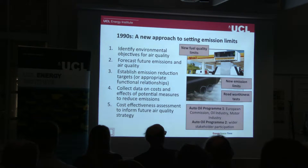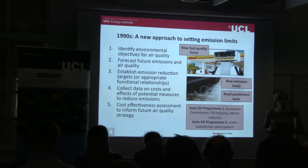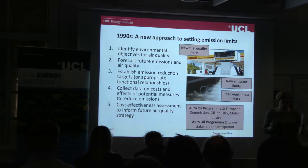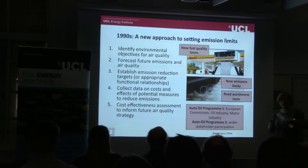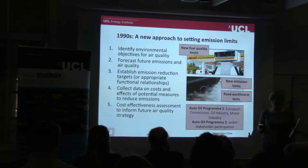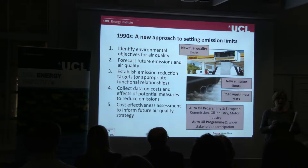Around about the same time, a new approach emerged. UN ECE was very much driven by best available technology as defined by the motor industry. The European Commission thought we need a new way — looking at what we would call environmental capacity. How much emissions can the environment cope with? You set your air quality limits required to protect human health, then you work backwards: forecast future emissions, work out how much you have to reduce them, then do a cost-effectiveness study looking at a range of different measures that will be the cheapest way of meeting your target.